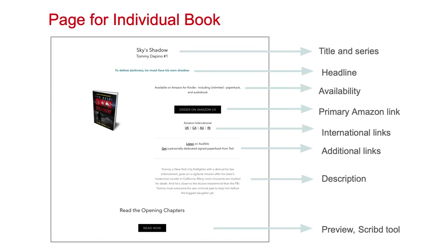If there are additional links related to the book, put them on there as well. For instance, I offer signed paperbacks — I have a link where you can get one. Beneath the purchase links is a description for the book, which is a more expanded blurb. And then at the bottom, I have a chapter preview. If you click that Read Now button, a tool opens which is free to use. You can upload a PDF with a chapter or a few chapters from your book.